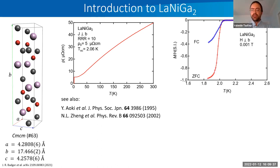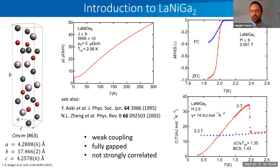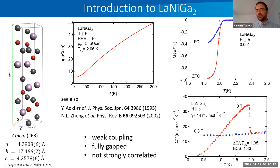Here I'm showing the susceptibility measurements — you can see a nearly full shielding fraction in the superconducting state. This is the heat capacity at low temperature, confirming bulk superconductivity. The jump at the superconducting transition is slightly smaller than the expected BCS value, indicating weak coupling. At low temperature there is no residual heat capacity, and there is exponential behavior, indicating a fully gapped superconductor with no evidence for gap nodes.